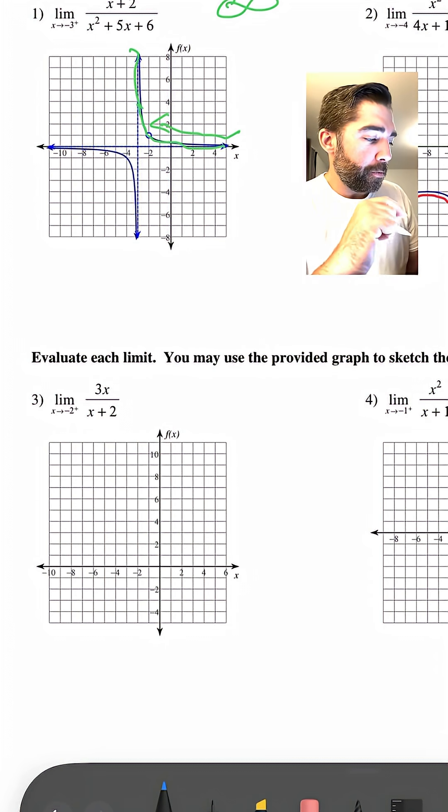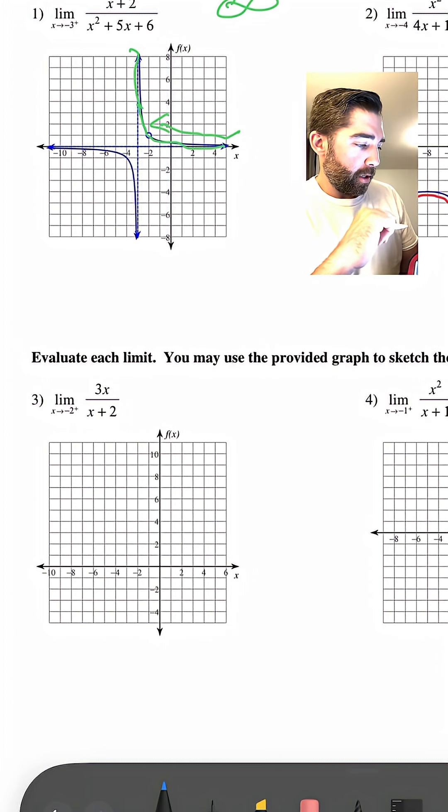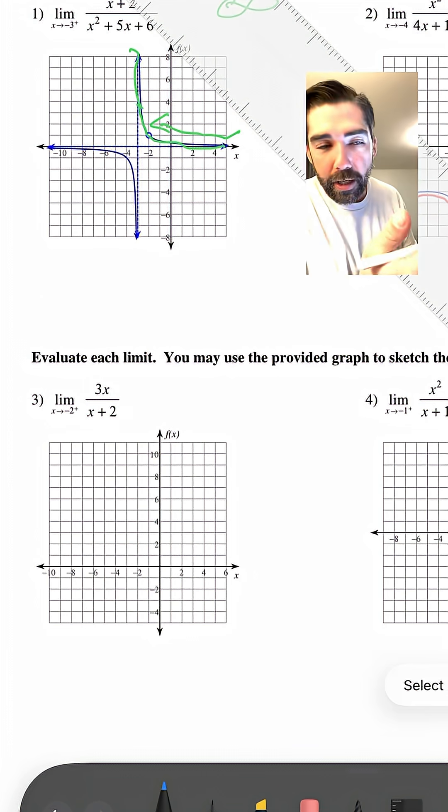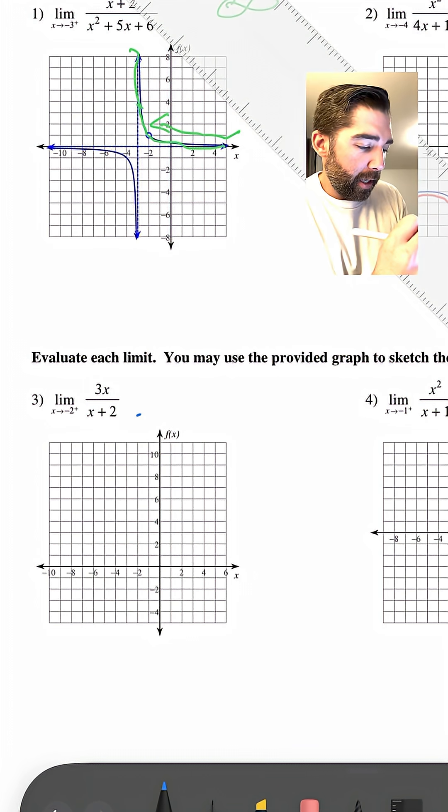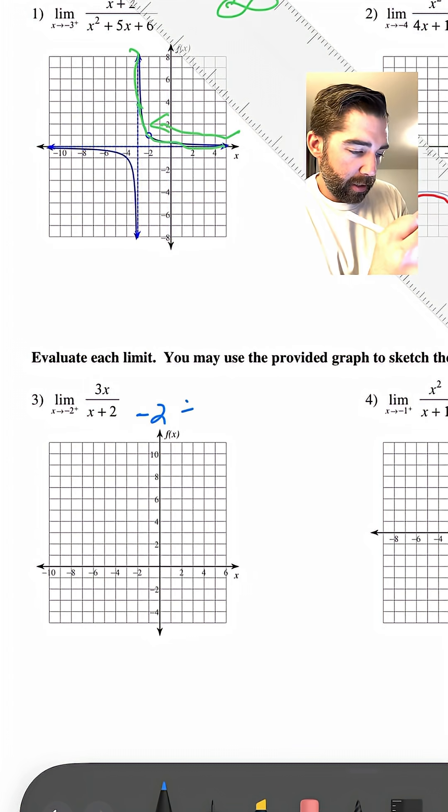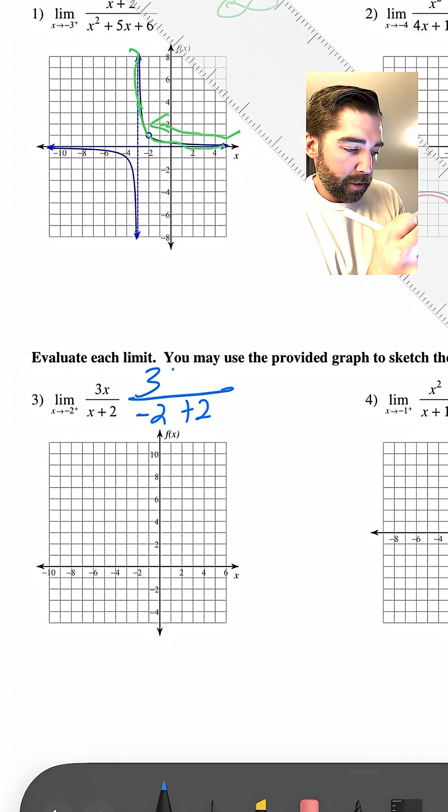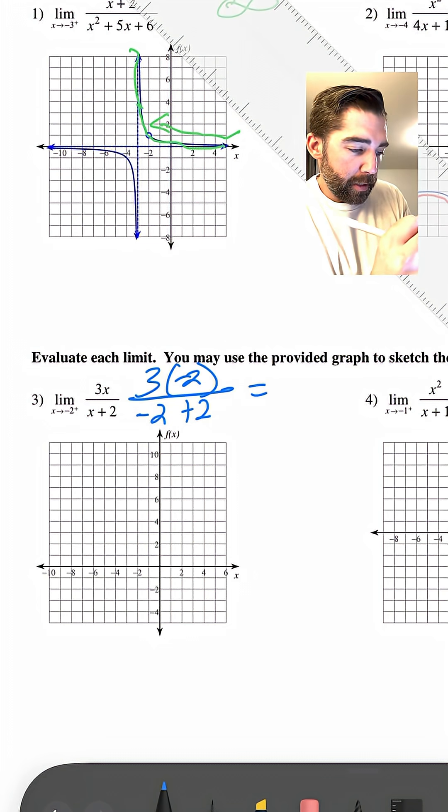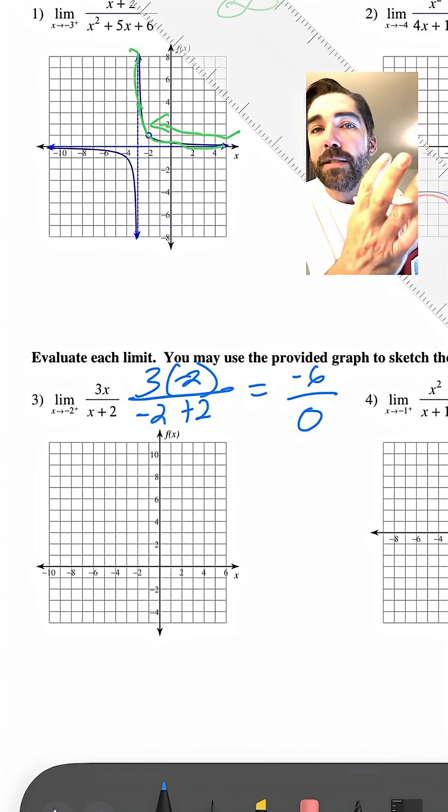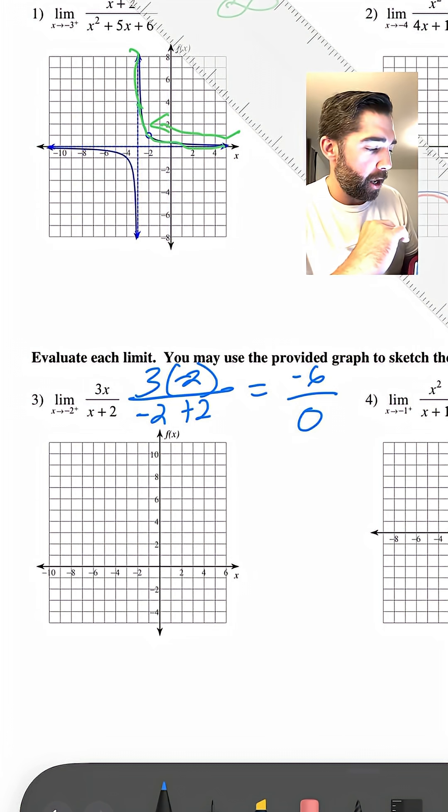We have the limit of 3x over x plus 2 as x approaches negative 2 from the right. It'd be great if we could just plug in negative 2. Let's see, we have negative 2 plus 2 and 3 times negative 2. That'd be great because we'd have negative 6 over 0, but that is bad. You can't have 0 in the denominator.